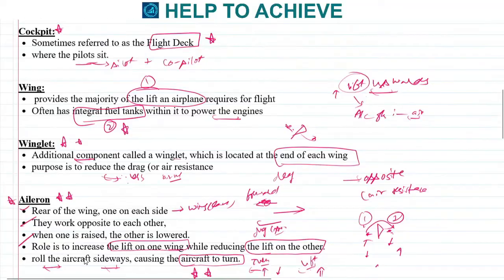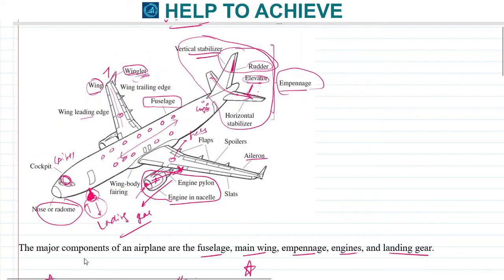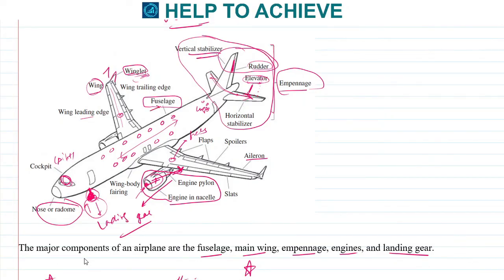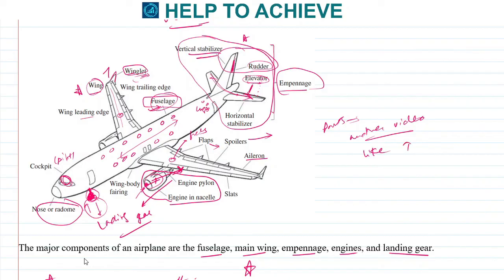In this video we have discussed some of the major components of the aircraft: the fuselage, the wings, the tail (empennage), the engines, and the landing gear. Some other parts such as spoilers and flaps have been left out and will be discussed in another video. If you have any doubts, comment below. If you liked the video, hit the like button and subscribe for more.